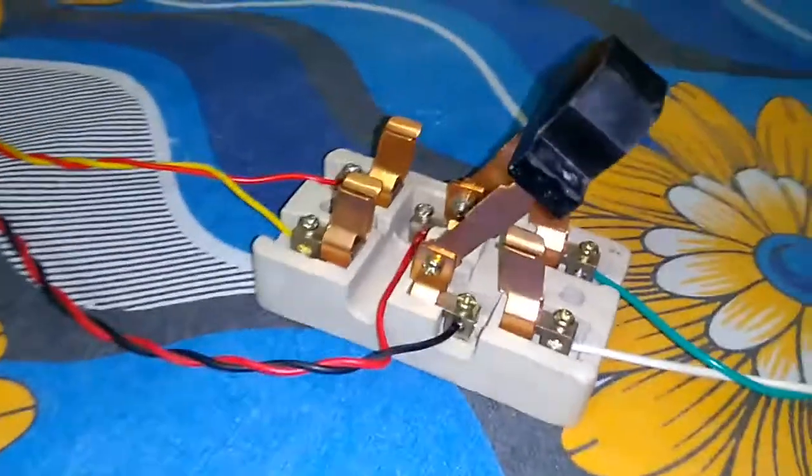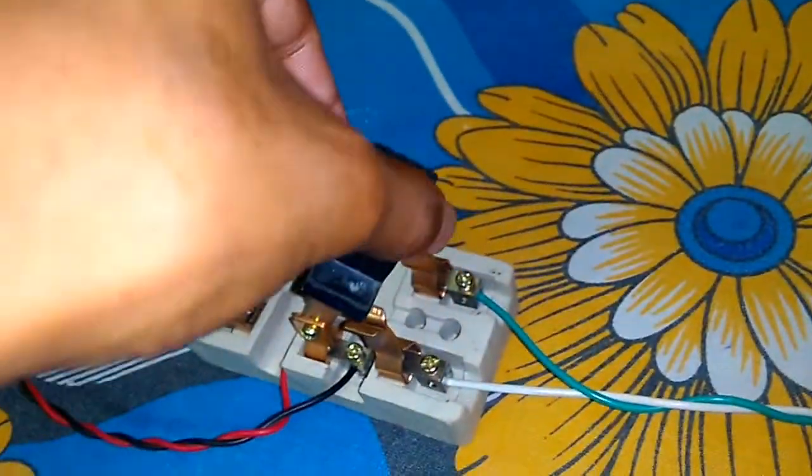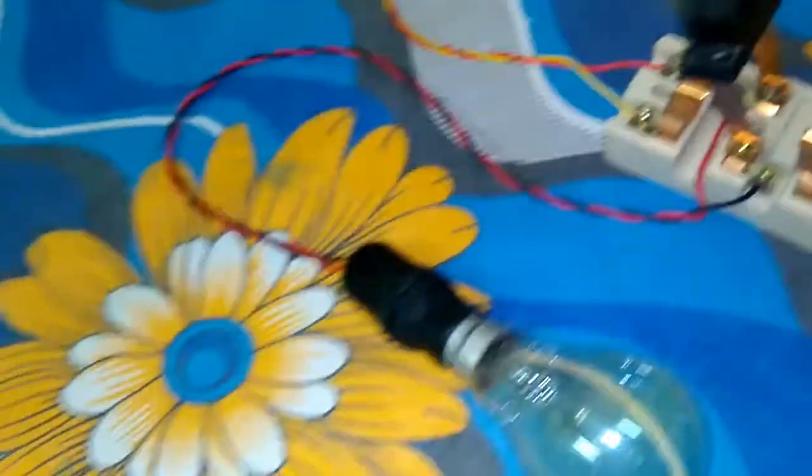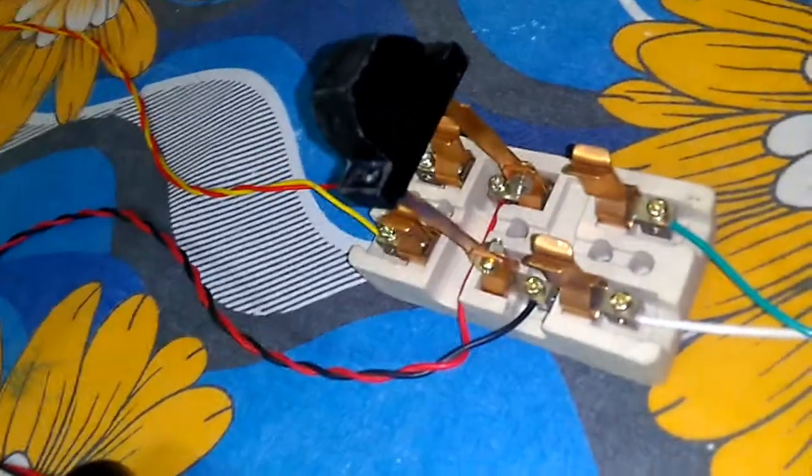As you can see, for example I connected a 100 watt bulb to the output point of the switch. The upper input point I connected with the generator, and the lower input point is connected through the main supplier.